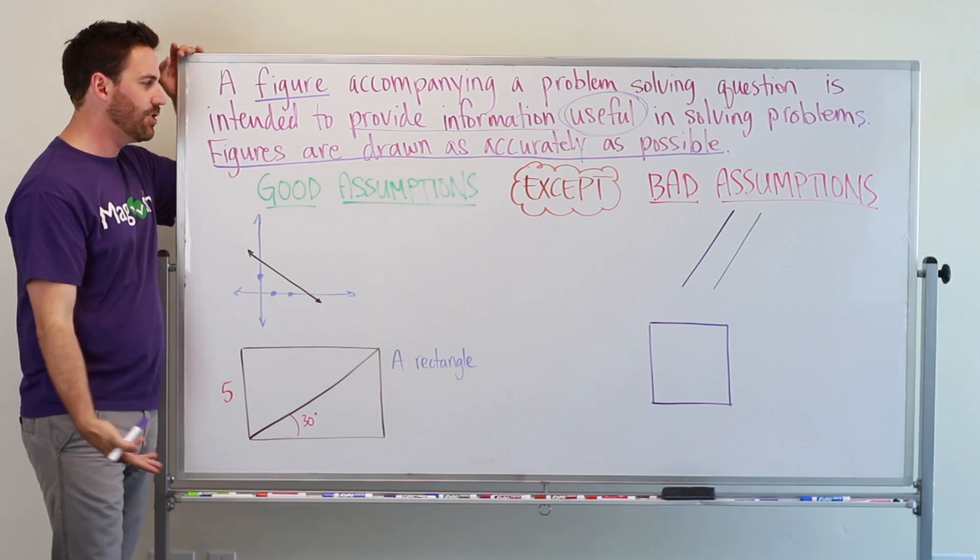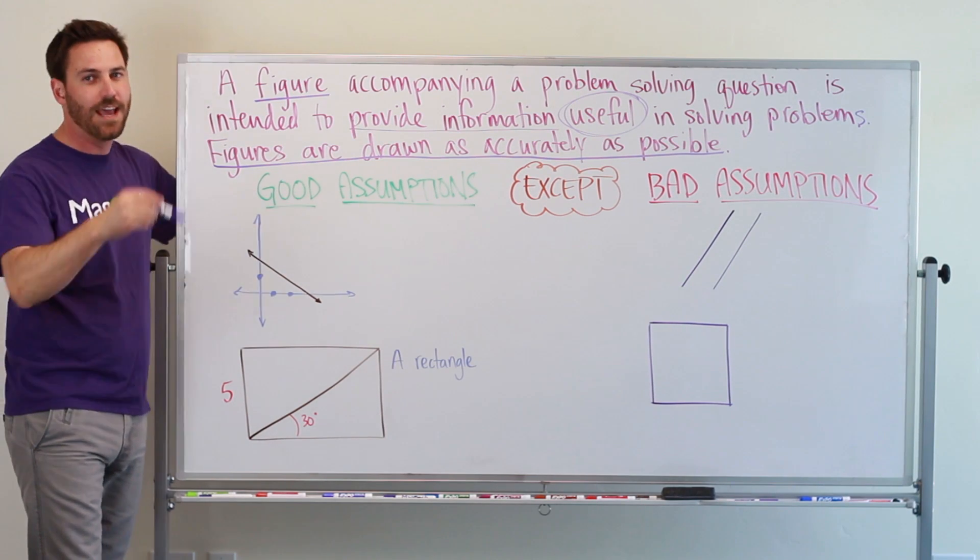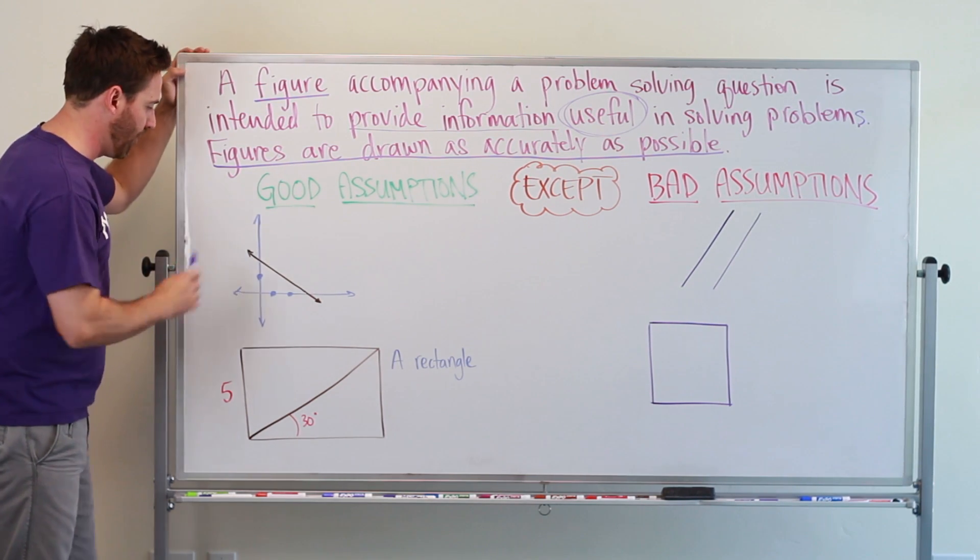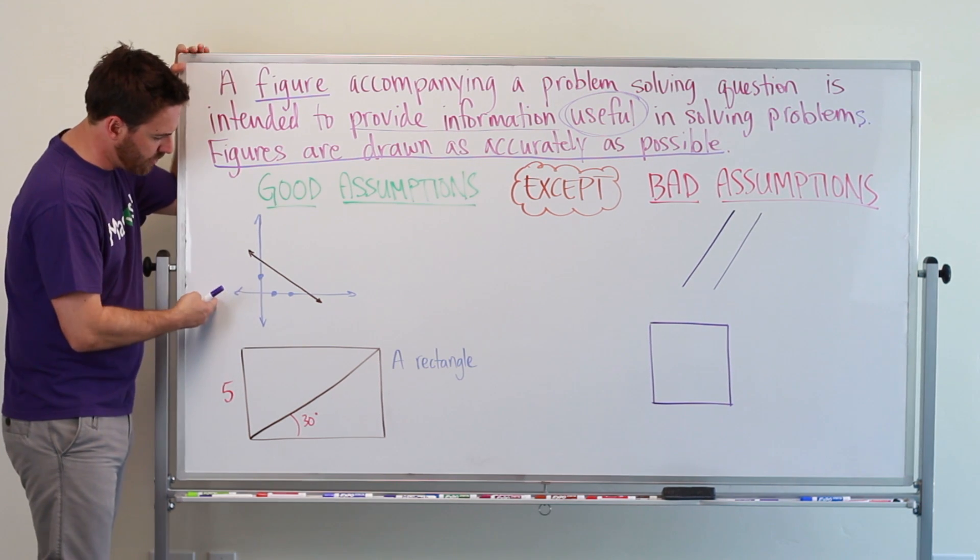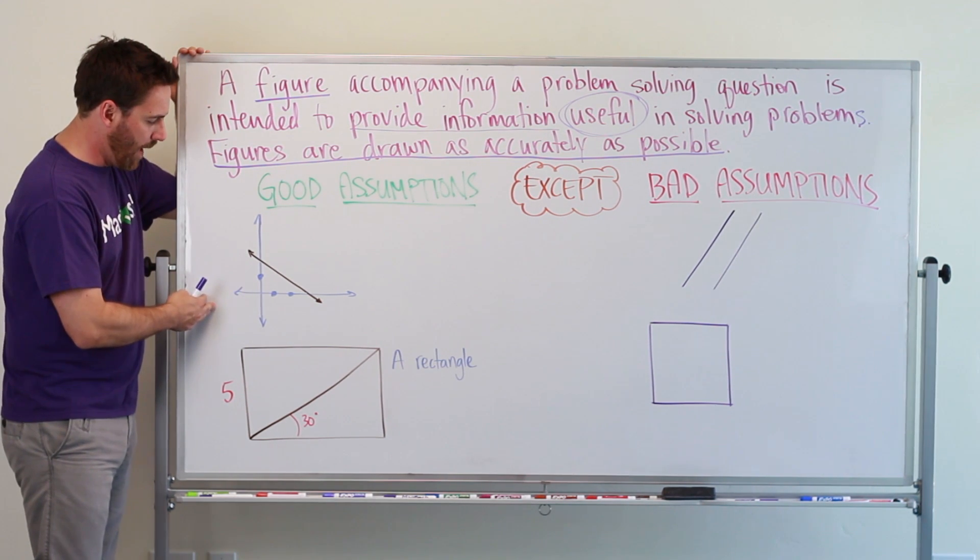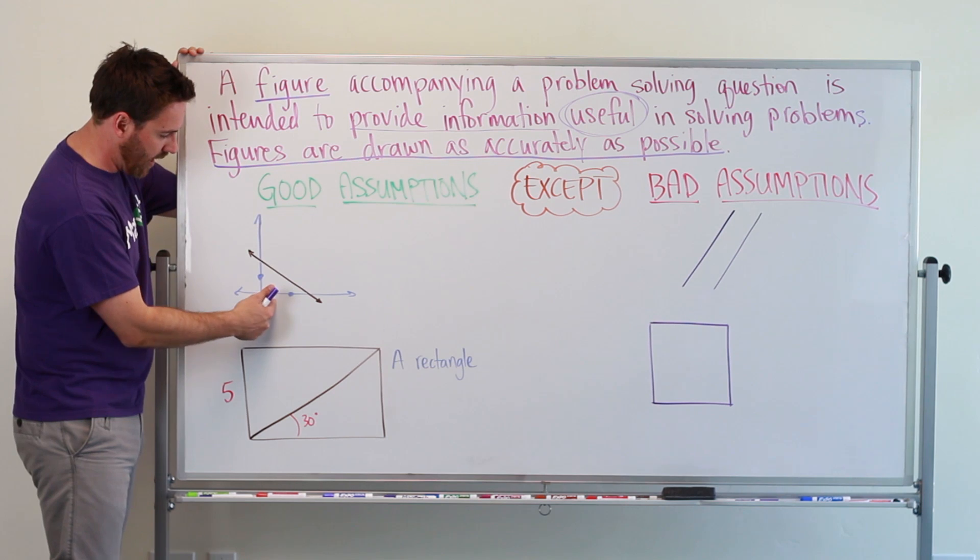Here I have on this side two good assumptions that you can make. For example, with this line, you can see that there's a dot here, a dot here, and then the line goes through right there.